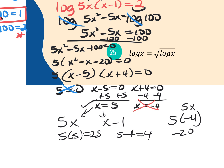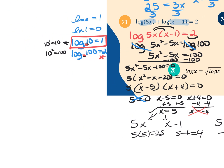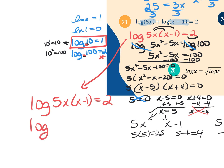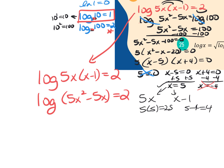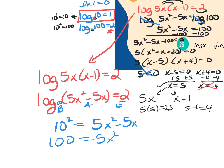Another method for this problem: from the condensed form, log of 5X times (X minus 1) equals 2. Distribute inside the log: log of 5X squared minus 5X equals 2. Since the assumed base is 10, convert to exponential: 10 to the second equals 5X squared minus 5X. This produces the same equation as before, so either approach works.